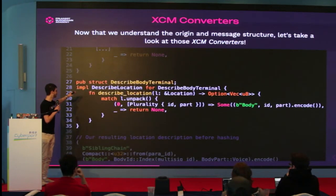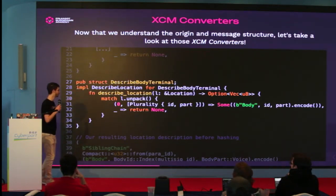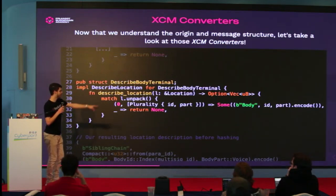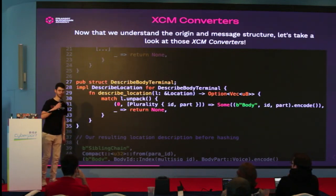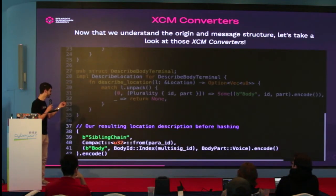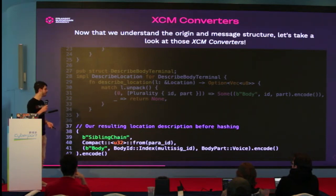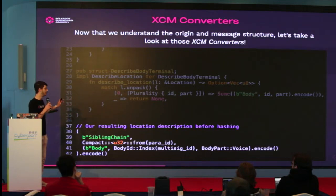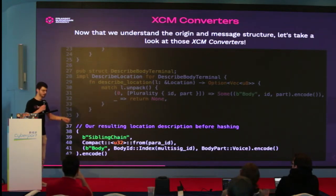There's a bunch of structs used to describe other kinds of junctions in XCM. For this use case we use describe body terminal, which takes that plurality with the body ID and converts it to the final description of the body ID part, which will have our multi-sig ID — zero in this example. The resulting description is: sibling chain, compact U32 with the para ID, and then body with the multi-sig ID. This gets encoded and converted into an account ID, ensuring that XCM location will always have the same account in any chain that has this hash description with describe family and describe body terminal.